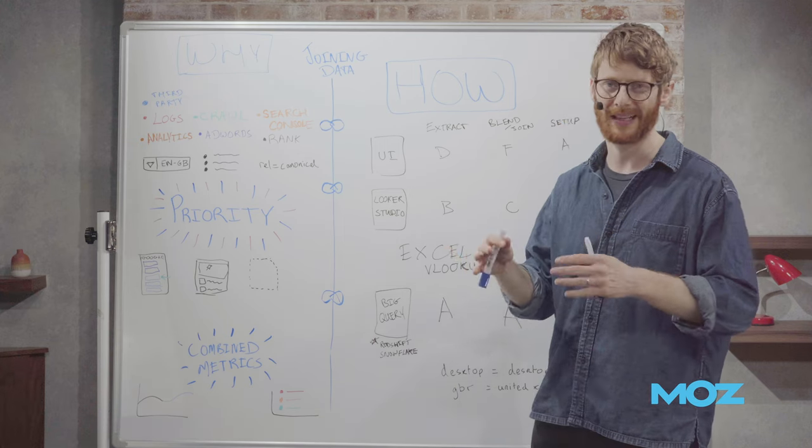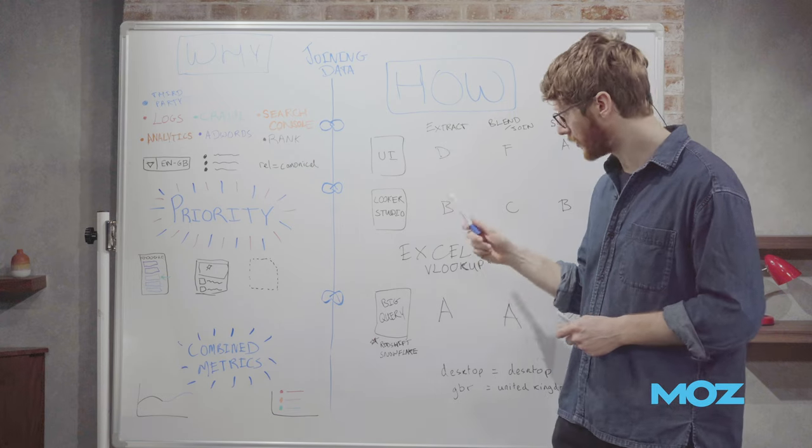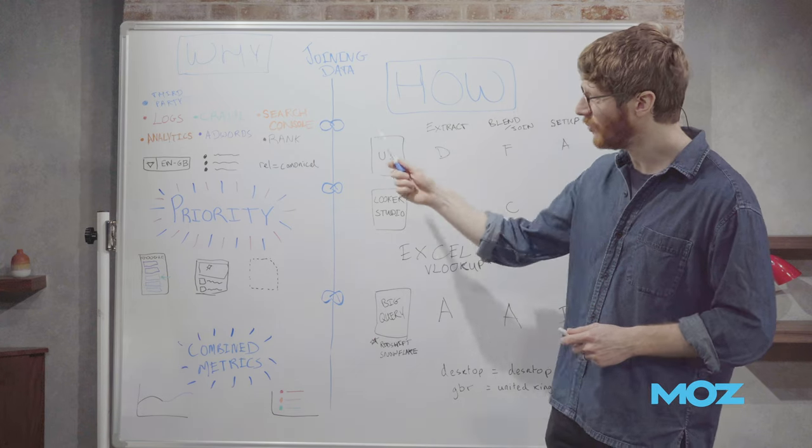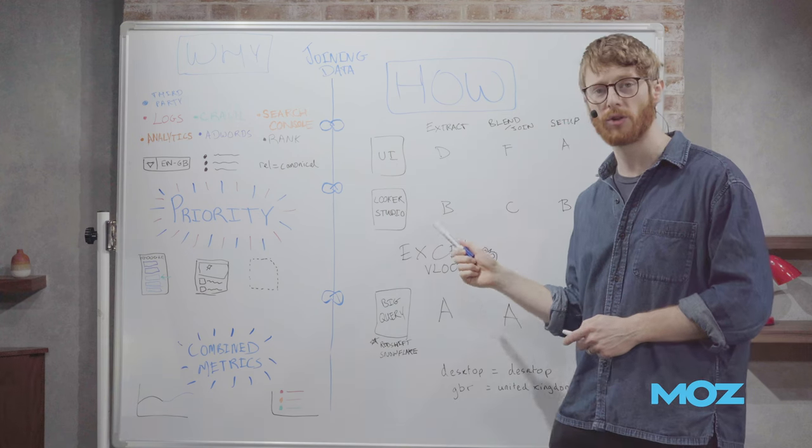bearing in mind sampling, cardinality, a couple of things like that. Either way, you get vastly more than you get from the UI. So we're bumping ourselves up to a B. It doesn't work for everything. It's not going to work for your logs, but for a lot of these sources, this is at least going to get you something.